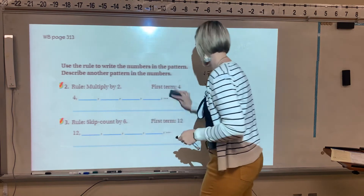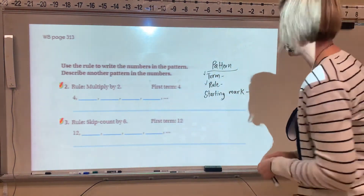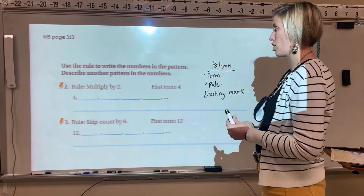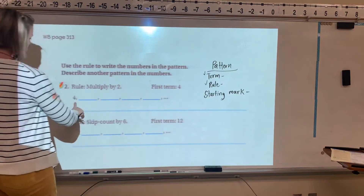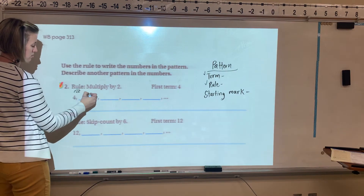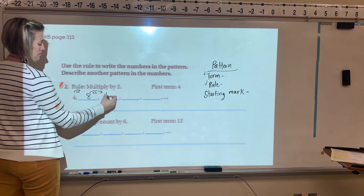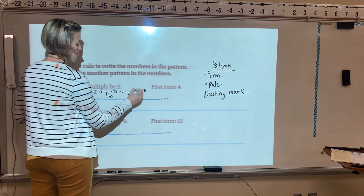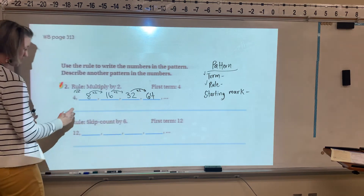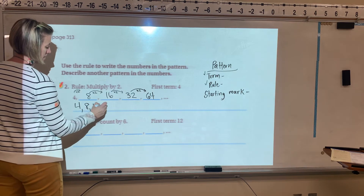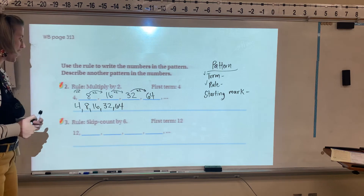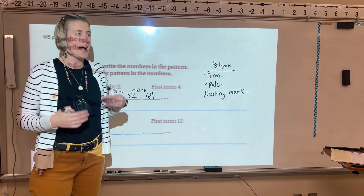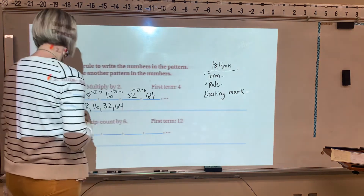A little more practice. Use the rule to write the numbers in the pattern. Our starting mark is 4, and the rule is multiply by 2. So: 4 times 2 is 8, times 2 is 16, times 2 is 32, times 2 is 64. The pattern is 4, 8, 16, 32, 64. Drawing arrows with the numbers shows your work and lets your teacher know your thinking — I love it when students show their work.